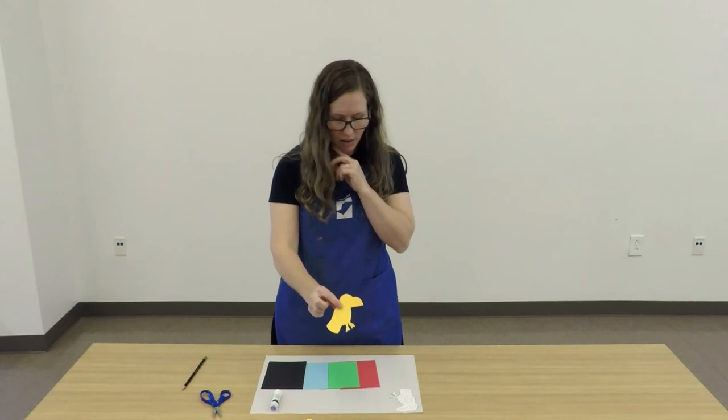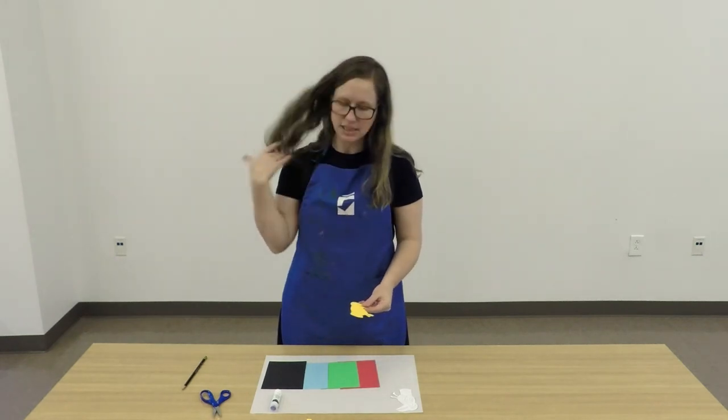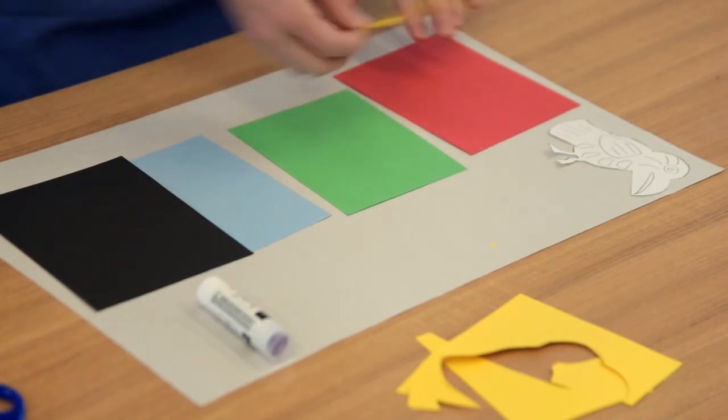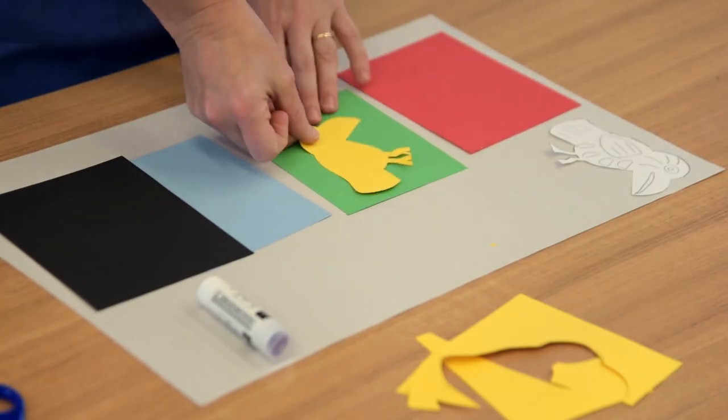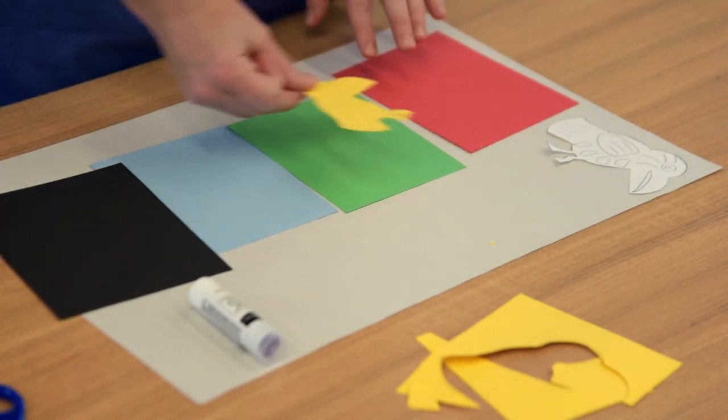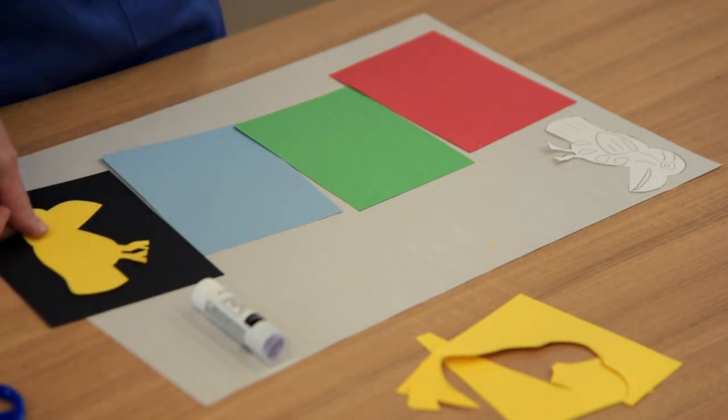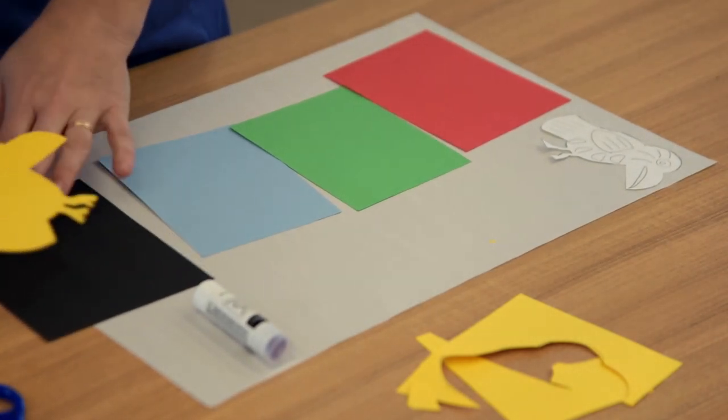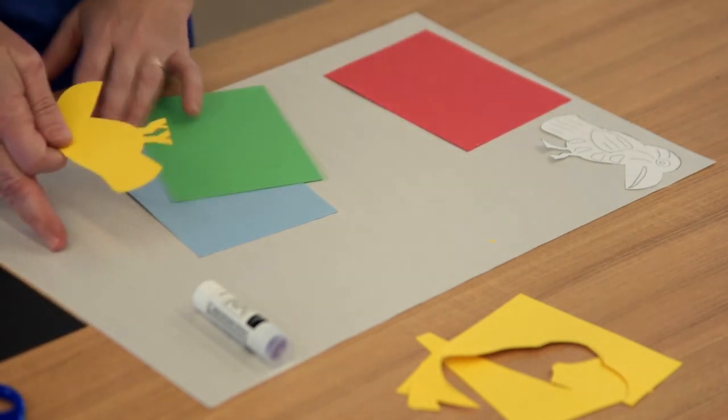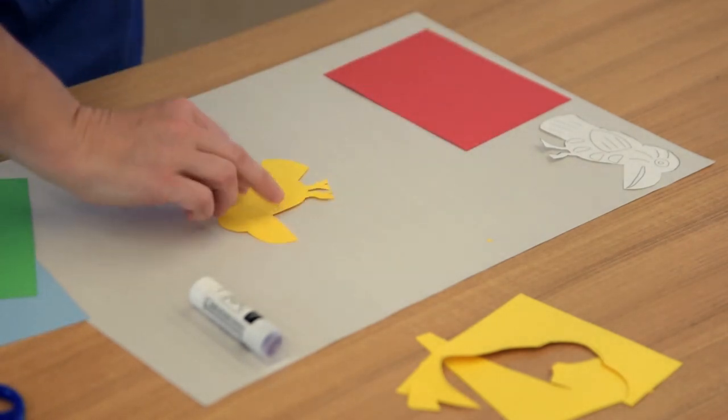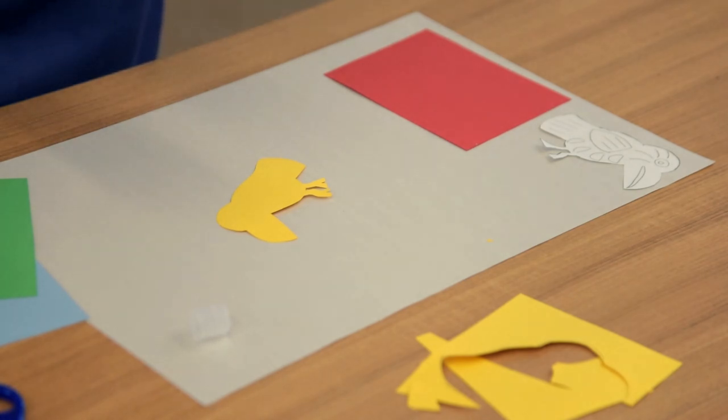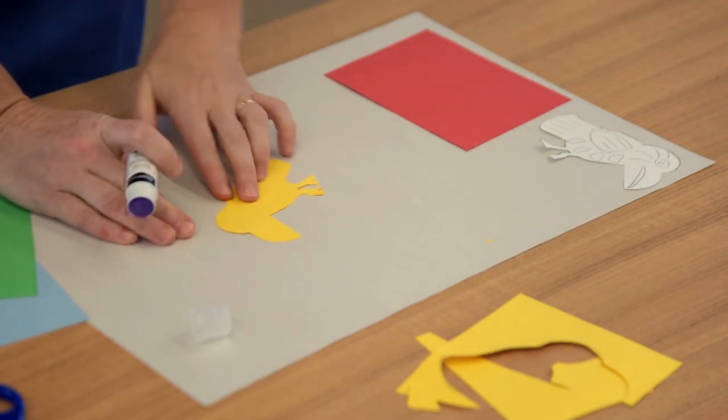Okay, so I've cut out my bird shape and next I'm going to decide which color I would like this to sit on. So I might test it out. Okay, yellow on red, on the green, on the blue. I think I like the way that - I know I want to save my black paper for my background so I've already decided that. So I think that I like the way that the yellow looks on the red. So I'm going to move these sheets of paper out of the way and I'm going to use my glue stick and just put glue all over the back of your animal.